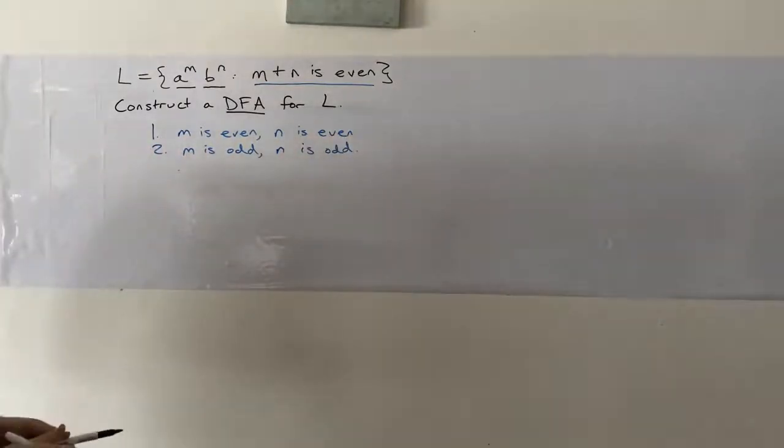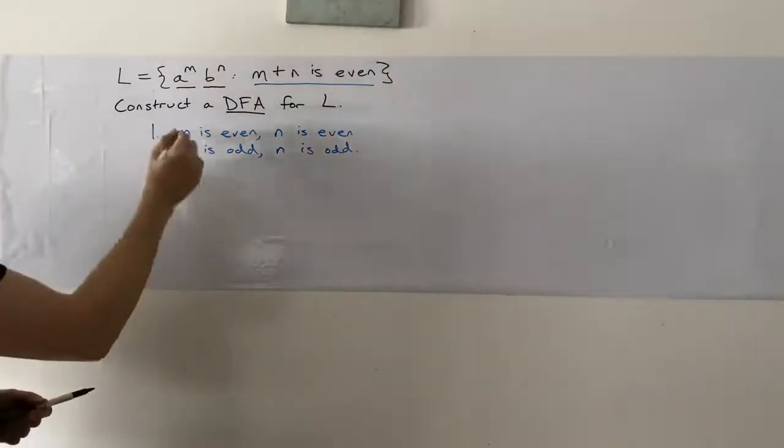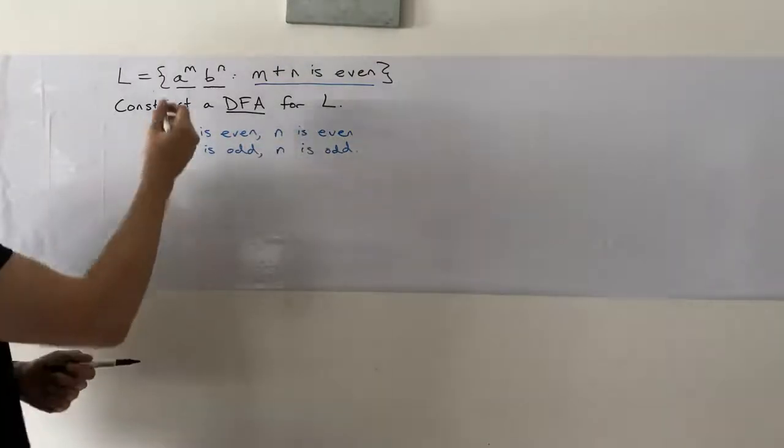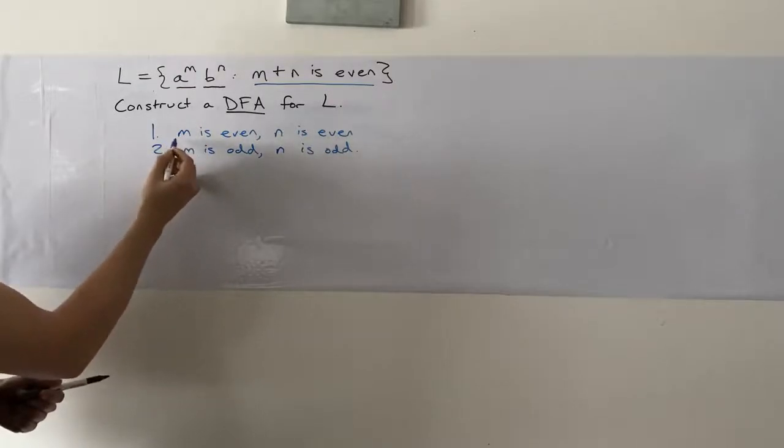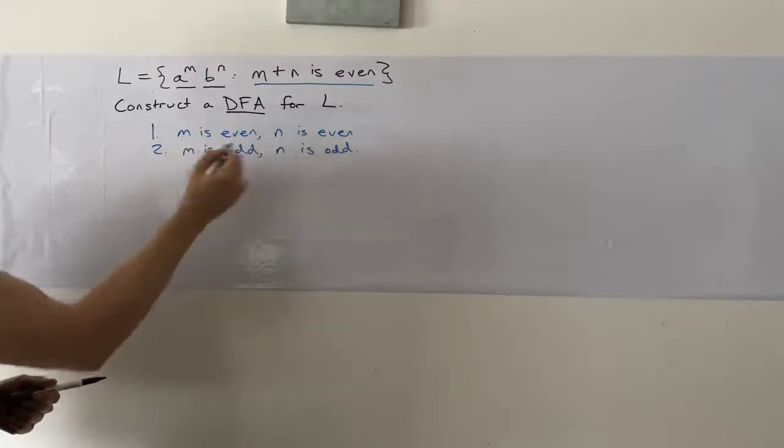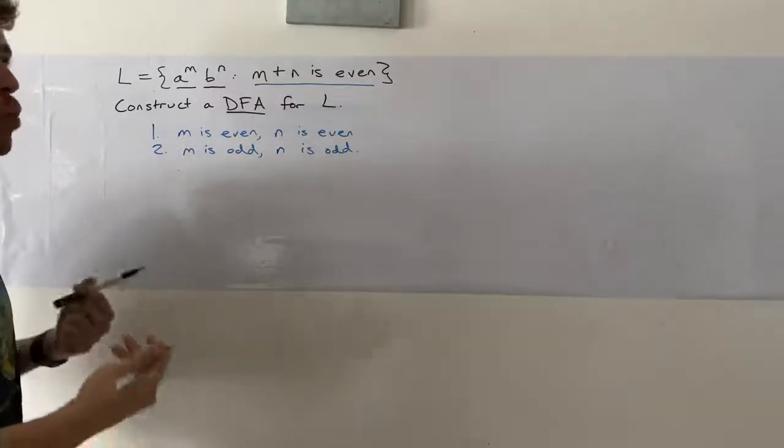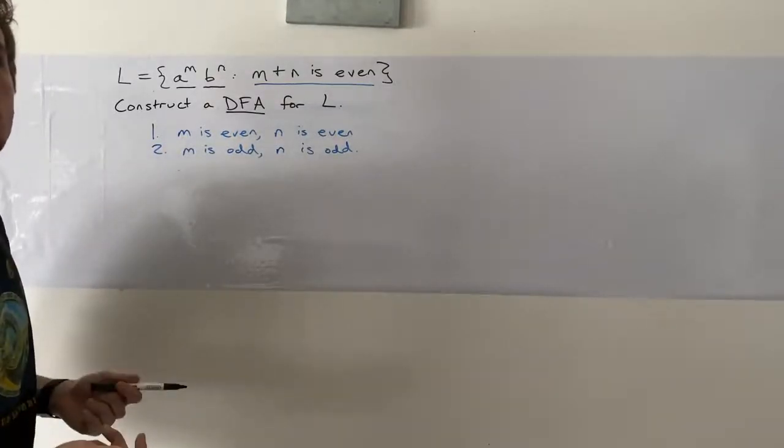We could make a DFA for the first one, a DFA for the second one, and we want all the strings such that they're in camp one or in camp two. But this is actually way too much work, we can approach this more directly.